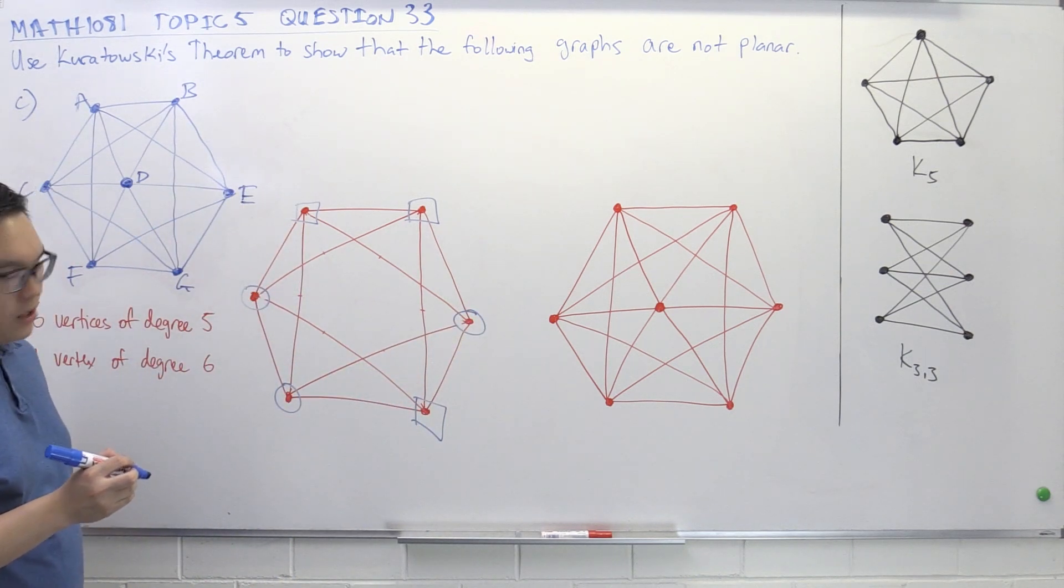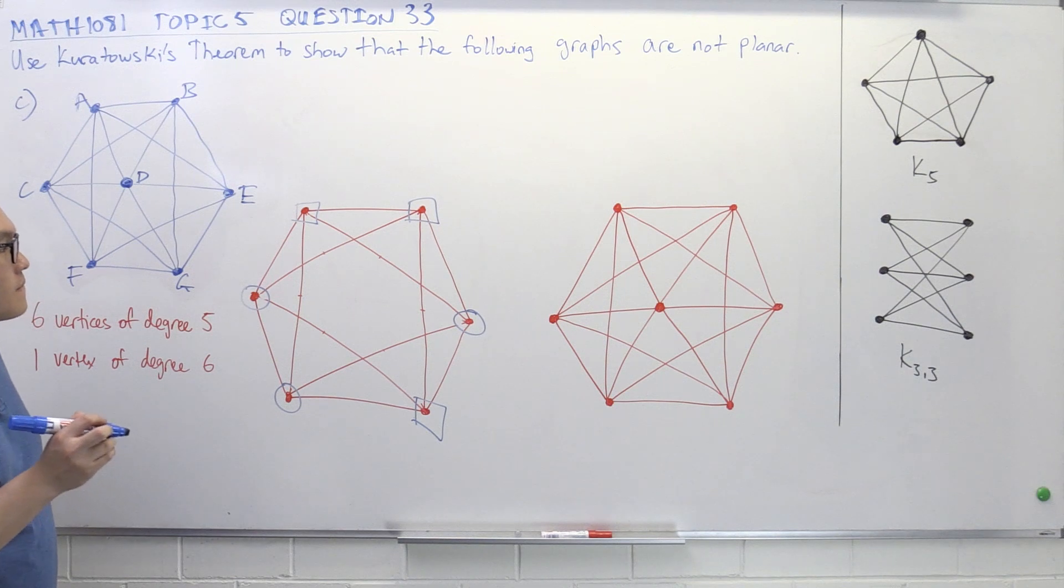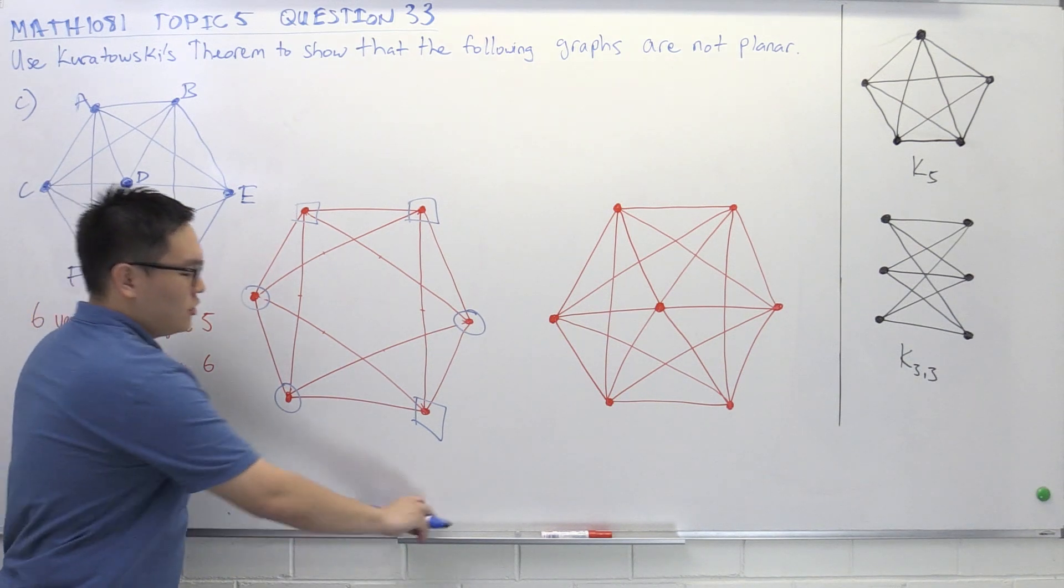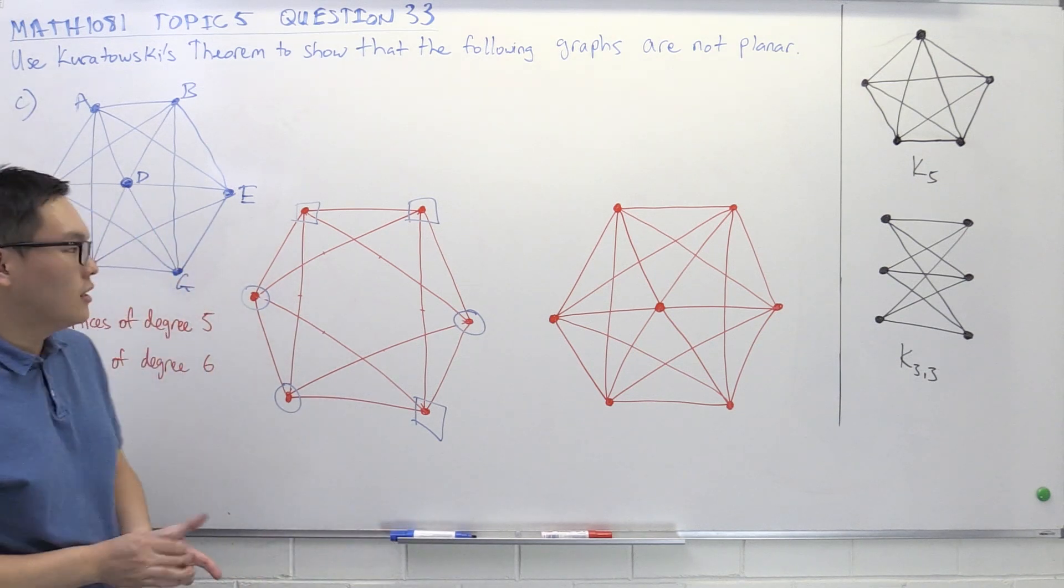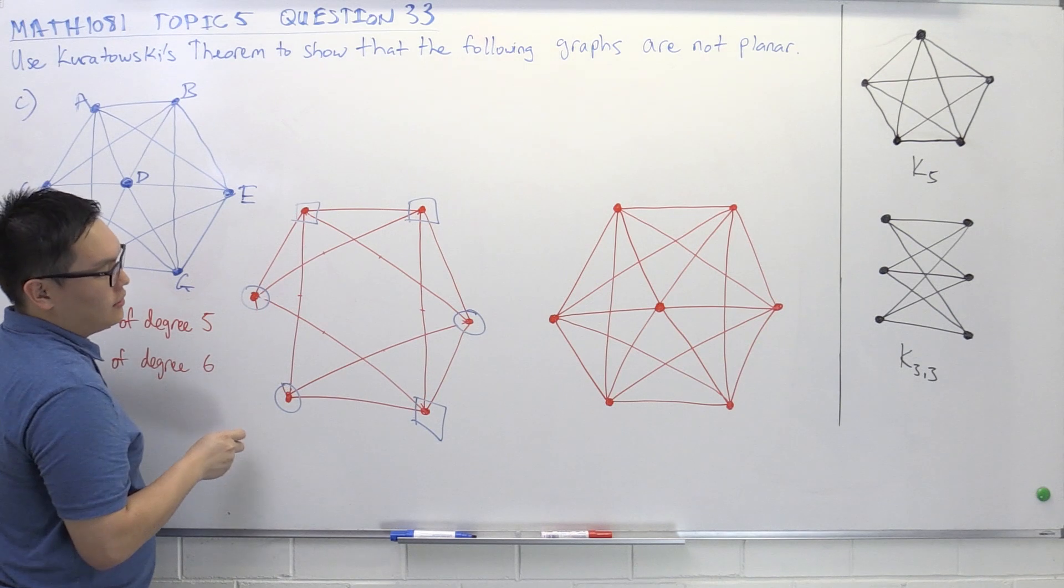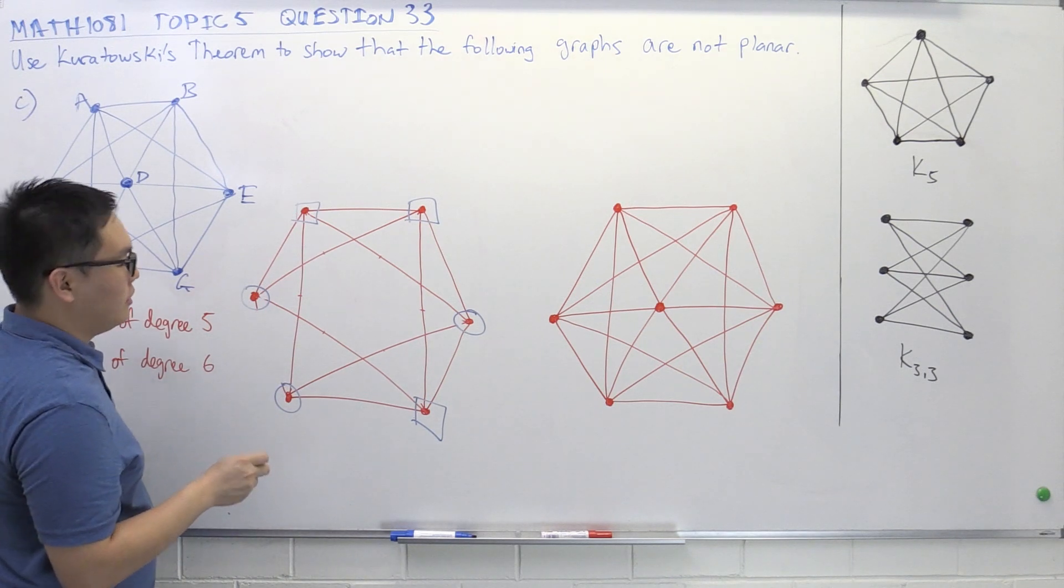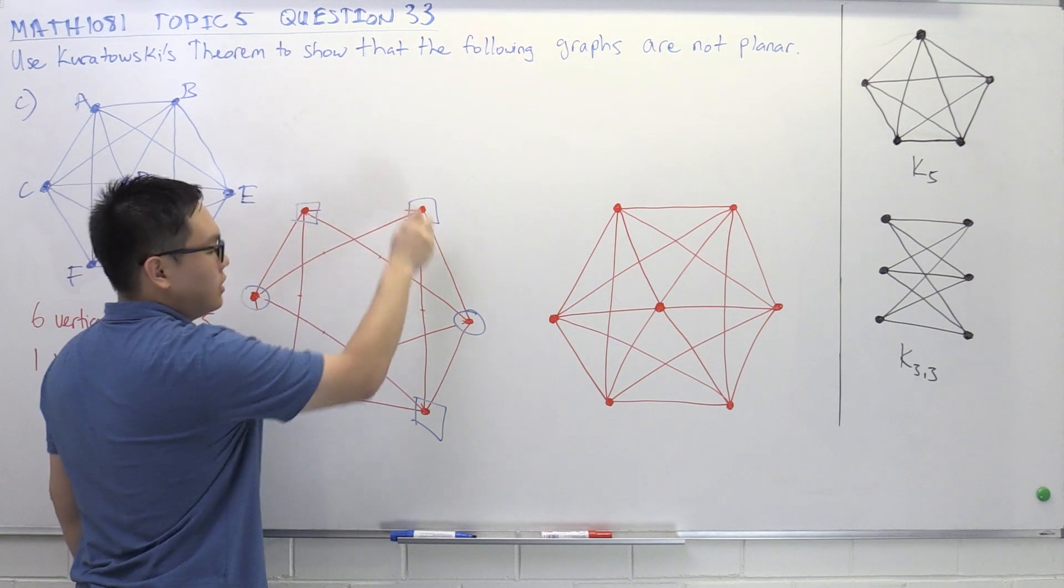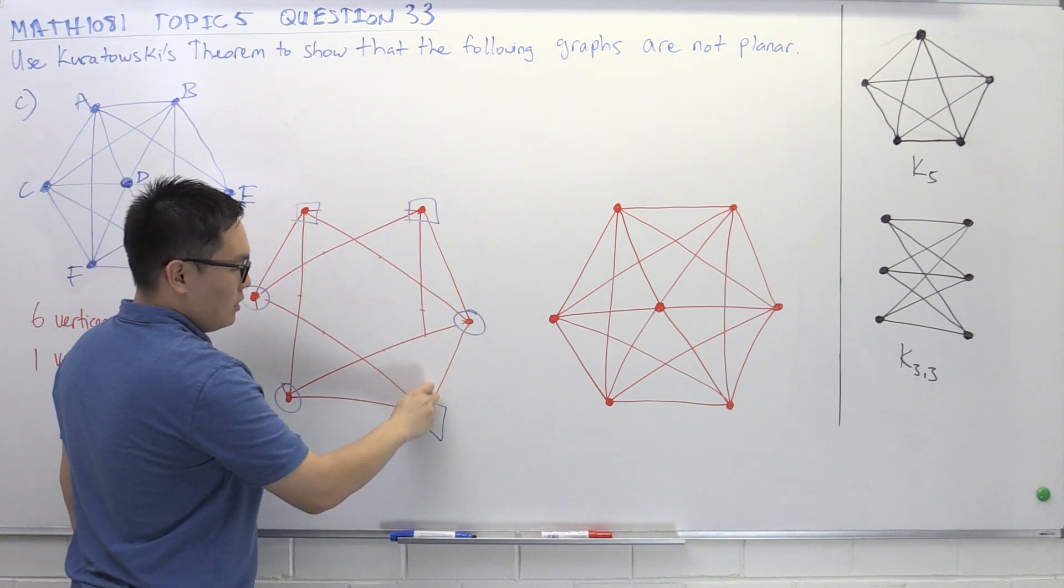So they have to be squares. Now that means that we can't have any edges between the circles. So that means I need to remove this edge, and I can't have edges between the circles, and I need to remove the edges between the squares. So this one and this one.